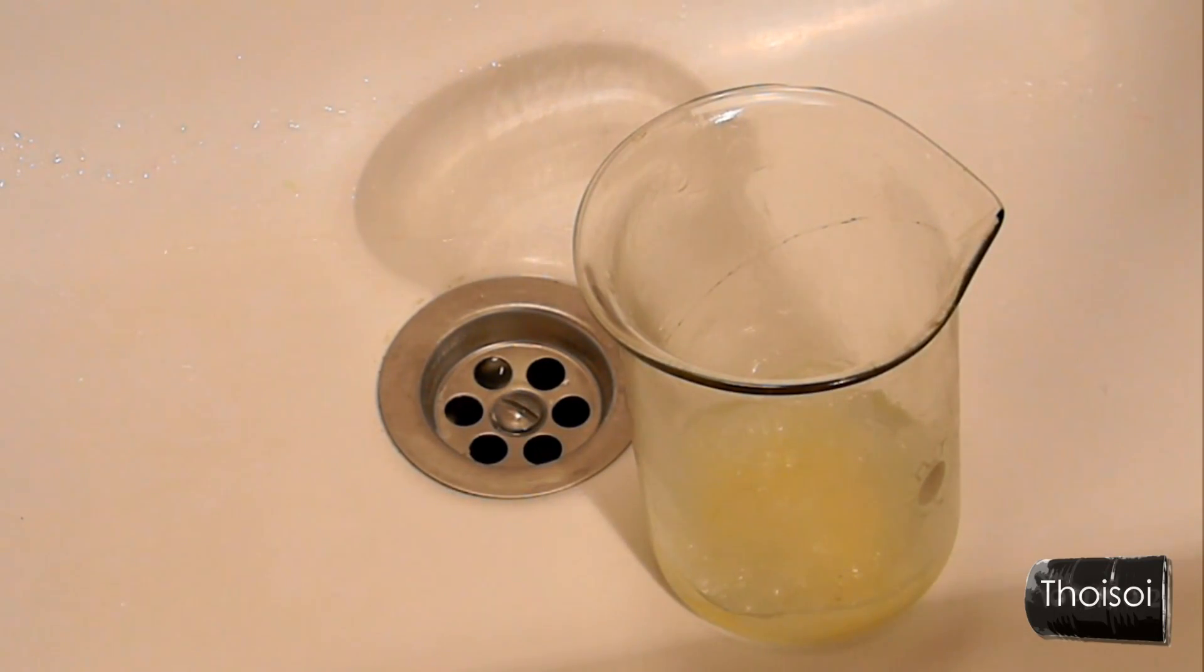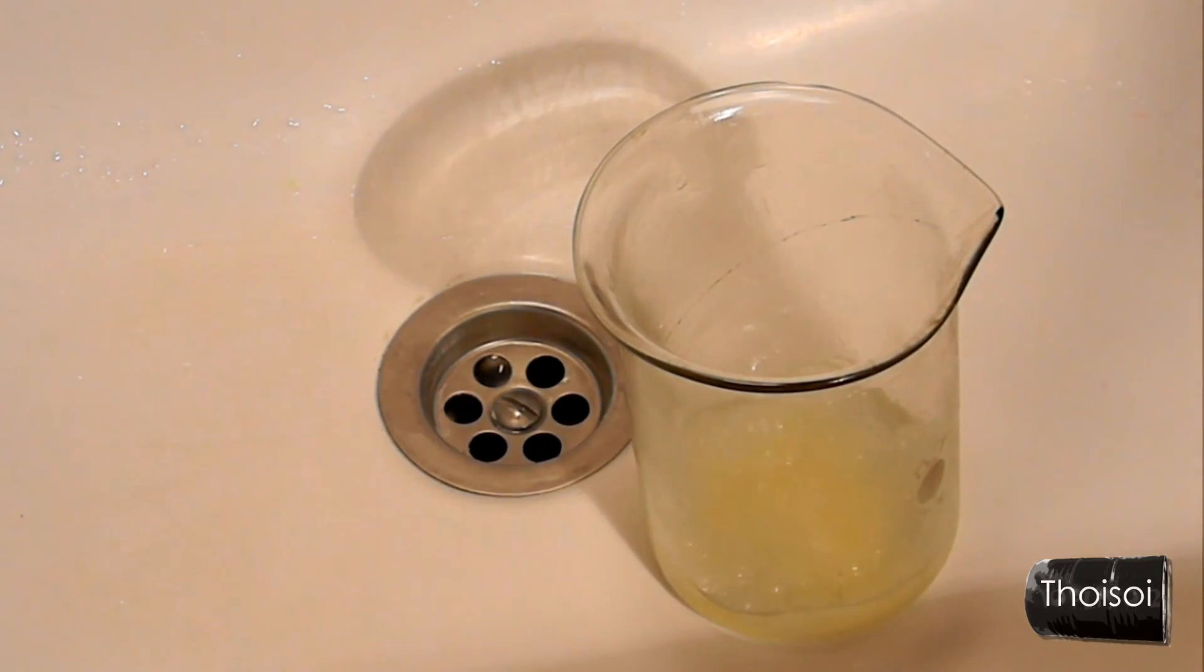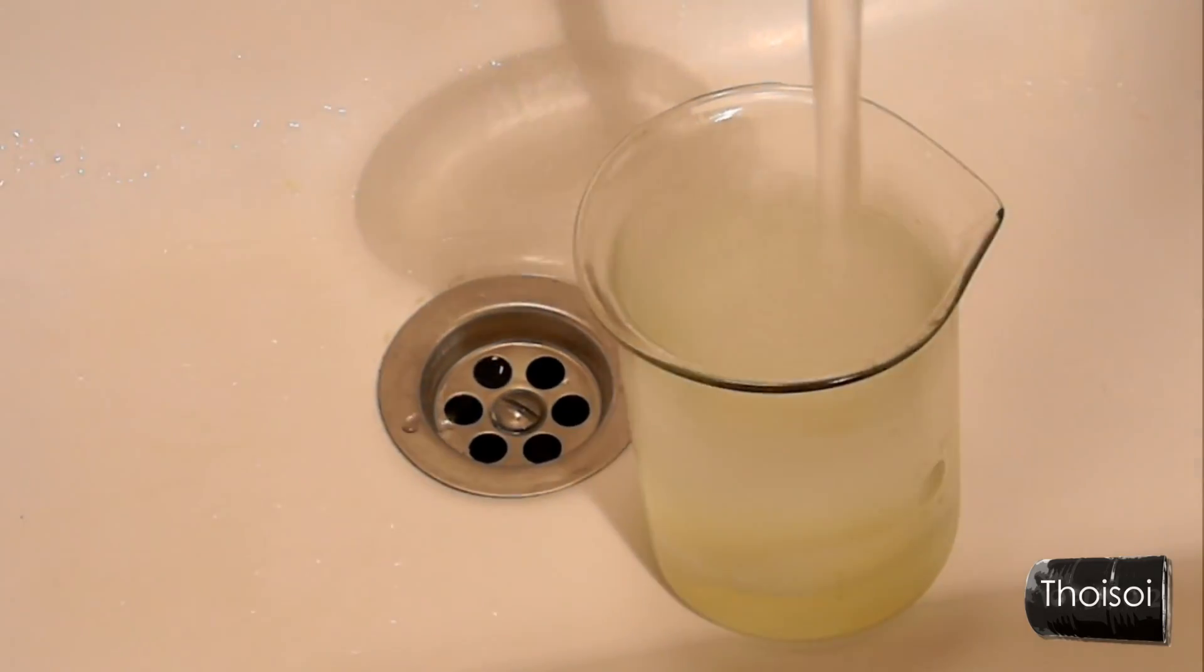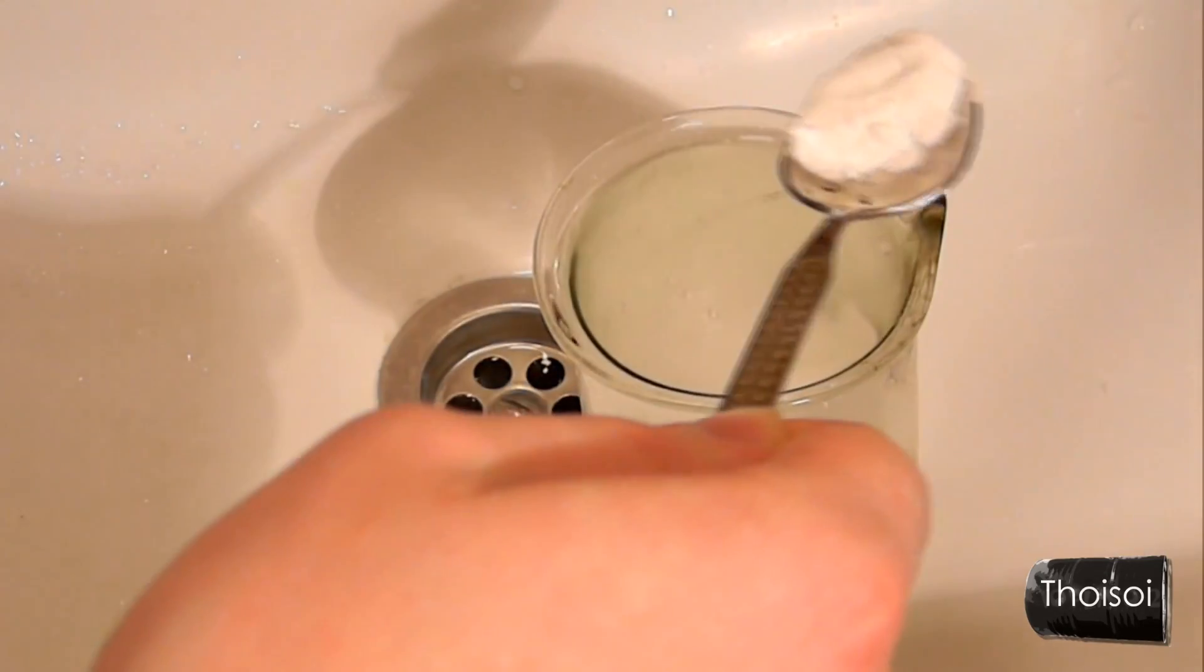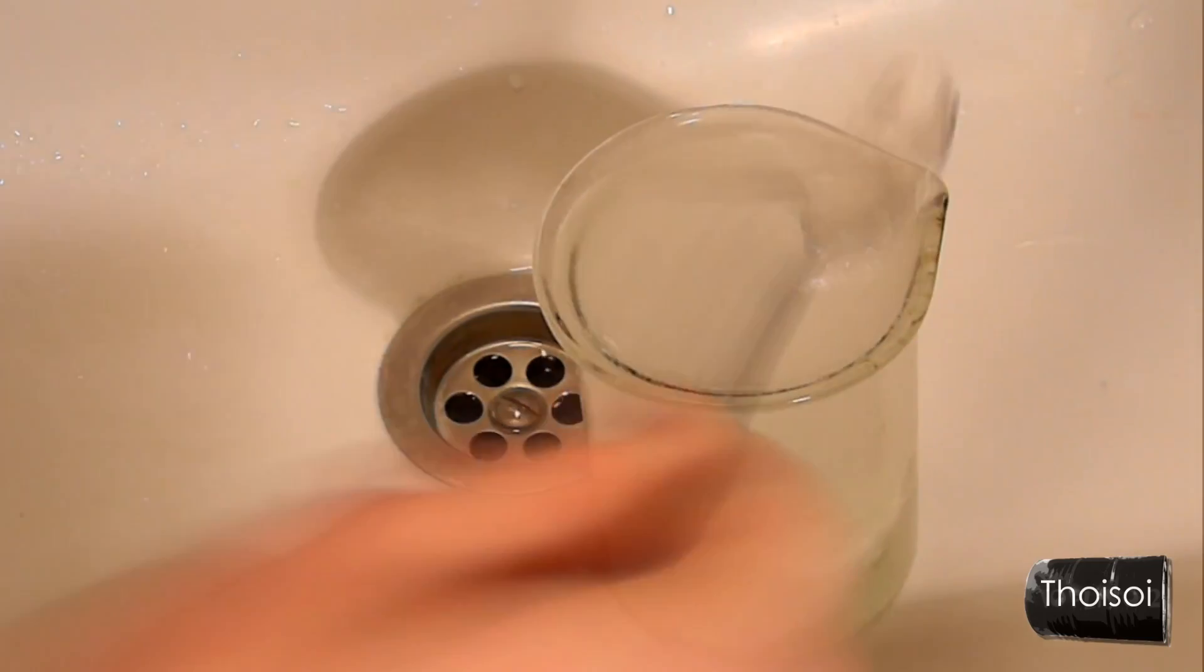After 15 minutes, cellulose is nitrated. Now it should be rinsed in cold water to get rid of the acid residues. I am adding a little baking soda to neutralize the acid solution.